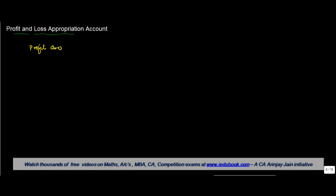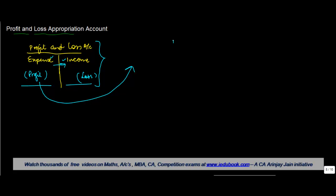The difference between these two sides is your profit if income is greater than expenses, or a loss if expense is greater than income. Once you've done that for your normal profit and loss account, this balance is taken out and put into an account called profit and loss appropriation account.